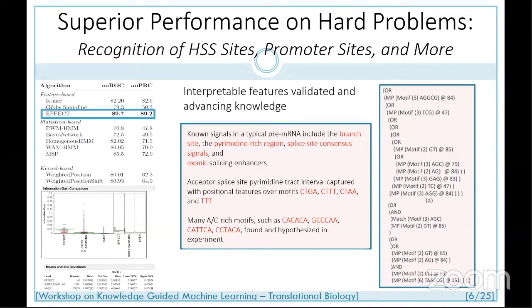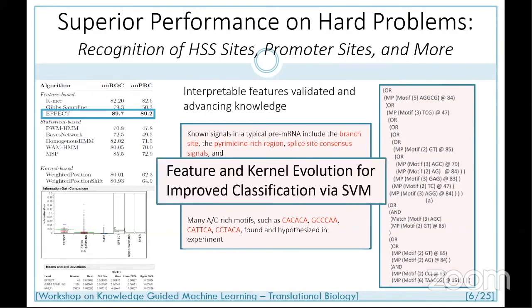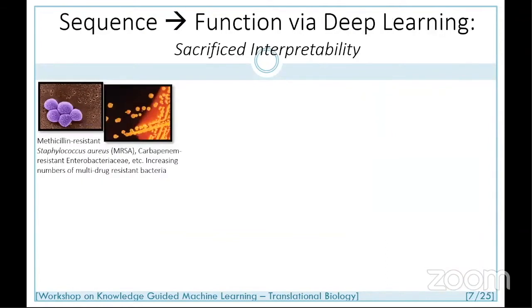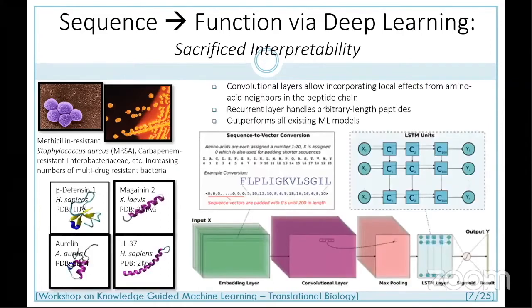All of this became possible because we married standard machine learning methods with our knowledge of what it means to be functional in the underlying biology. We then used some of these ideas to evolve features and kernels. And as was mentioned, there's now a drive toward deep neural networks. I resisted it in the lab for some time because I'm driven to understand the deeper biology, but I had students eager to apply deep neural networks to infer function from sequence.